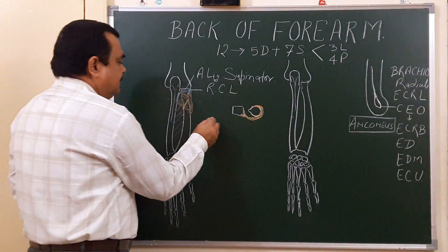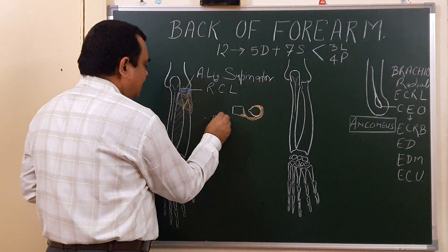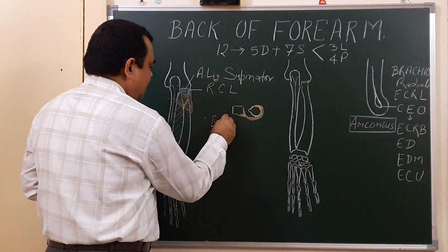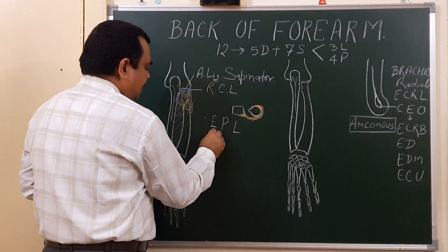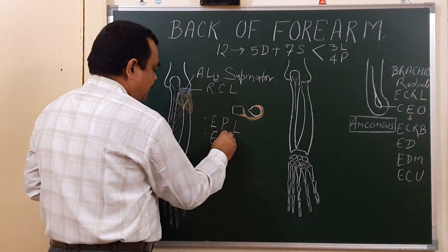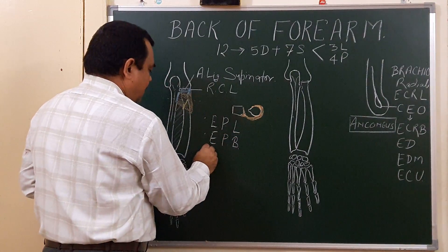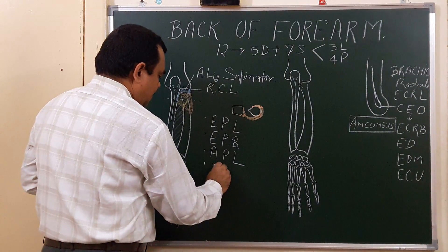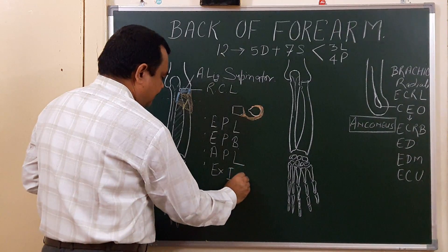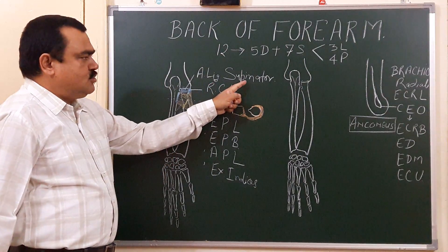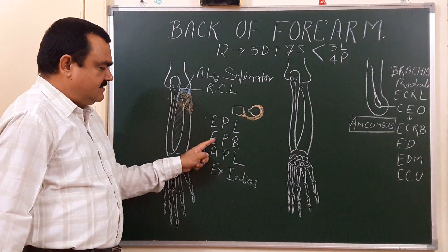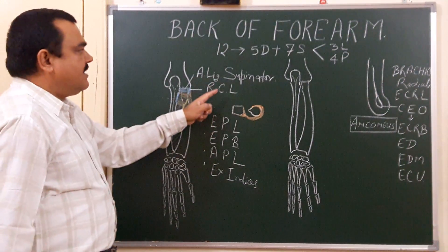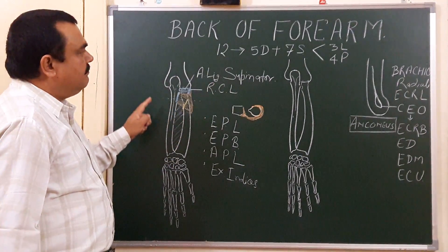The five deep muscles of the back of the forearm are: supinator, extensor pollicis longus, extensor pollicis brevis, abductor pollicis longus, and extensor indicis. These muscles form the deep group of the posterior compartment of the forearm.